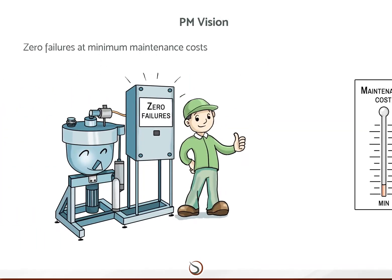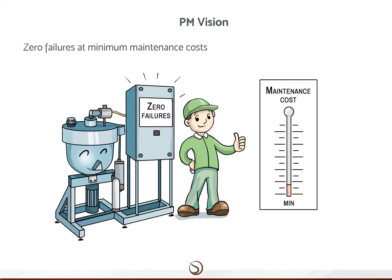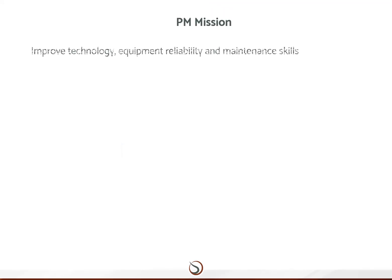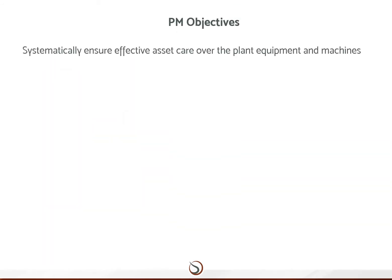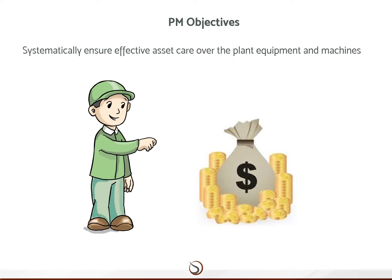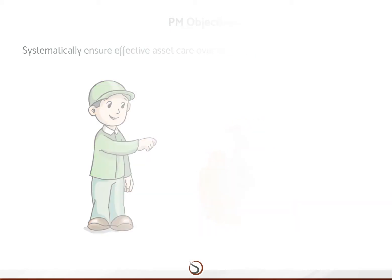The vision of Planned Maintenance is to achieve and maintain zero failures at minimum maintenance costs, and it has a mission to improve technology, equipment reliability, and maintenance skills.